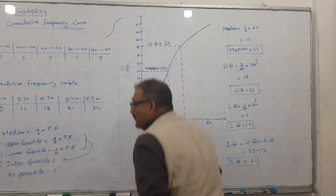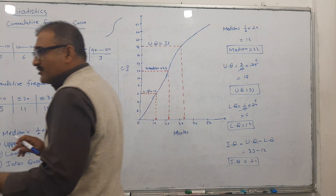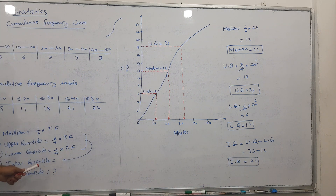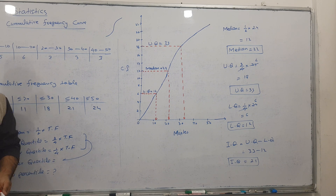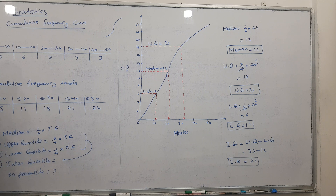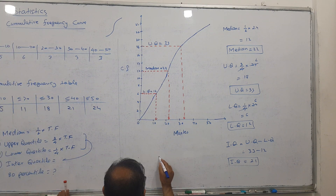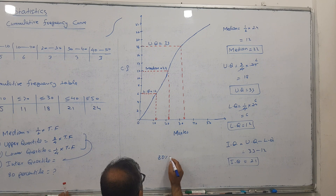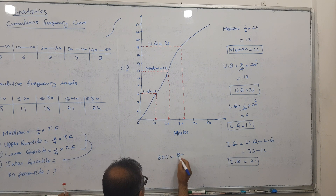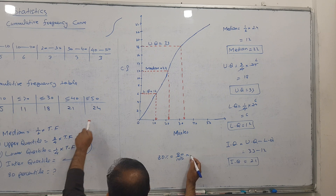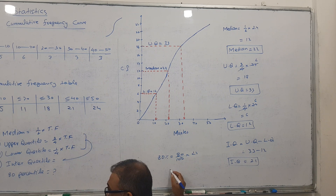Now let's talk about percentiles — sometimes 80th percentile, sometimes 60th or 40th percentile. A percentile works like a percentage. To find the 80th percentile, the formula is: 80 divided by 100, multiplied by the total frequency of 24. Cancel the zero.